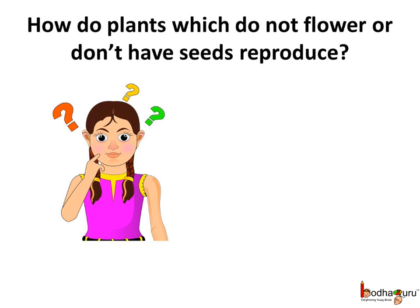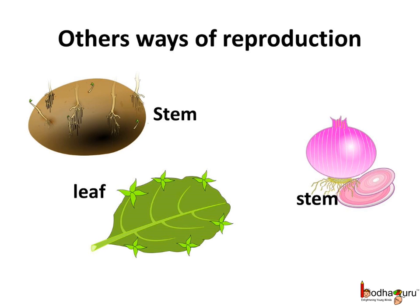Now the question is, how do plants which do not flower or don't have seeds reproduce? Well, there are other ways too by which plants reproduce, and these don't involve the male or the female gametes. Let us see what these are.